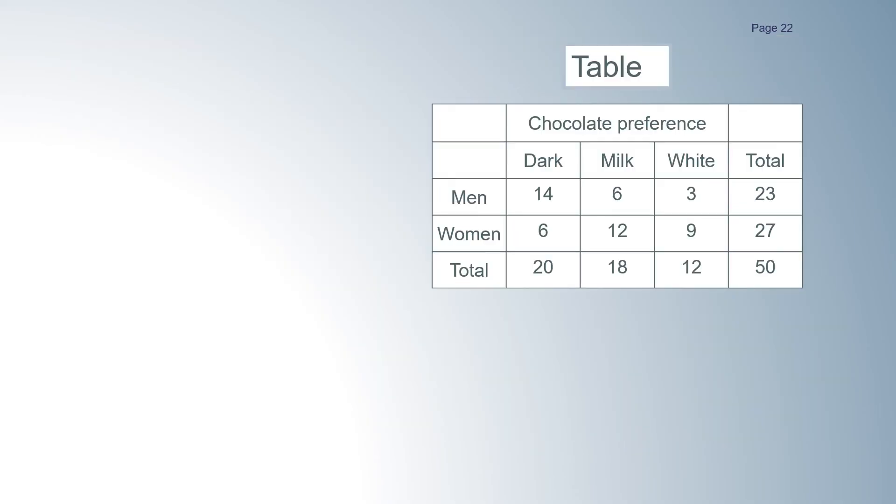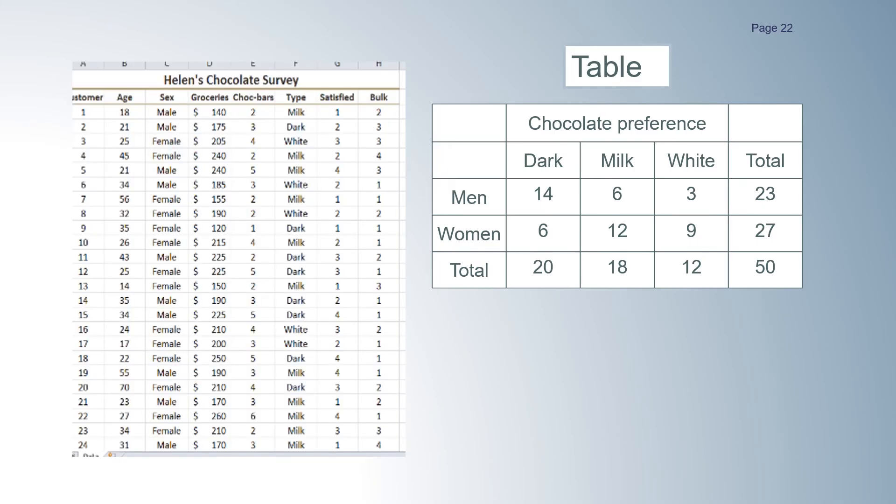Usually when we're doing a test for independence like this we do not have the data in a table but in raw form. We would get the statistical package to perform the chi-squared test.